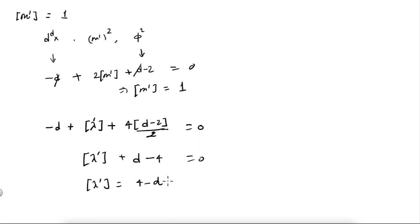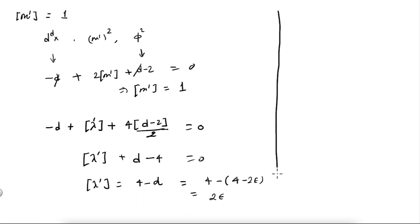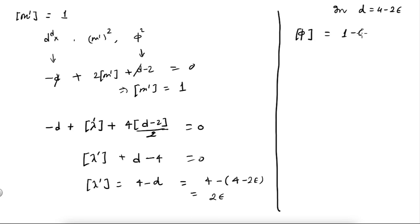In d = 4 minus 2 epsilon dimensions, [lambda'] = 2 epsilon. So to summarize: phi has dimension 1 minus epsilon, m-prime has dimension 1 (unchanged from four dimensions), and lambda-prime has dimension 2 epsilon.